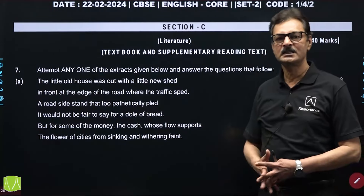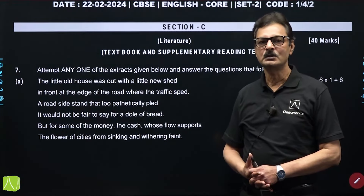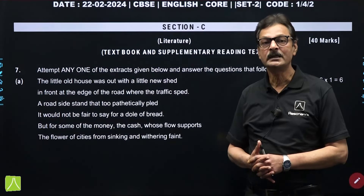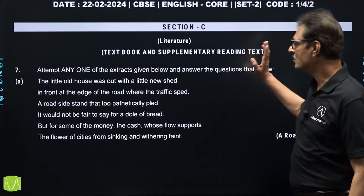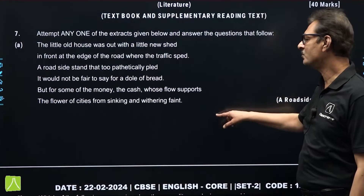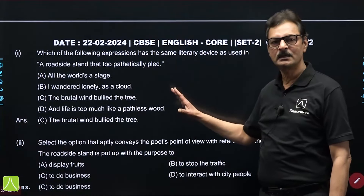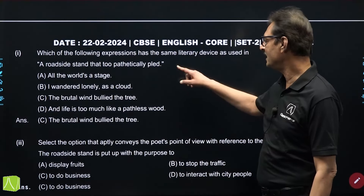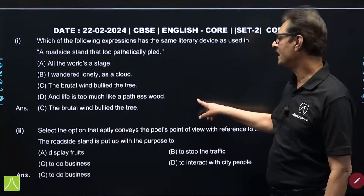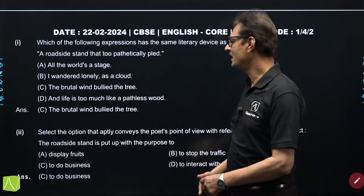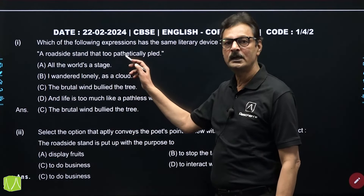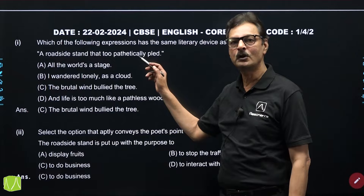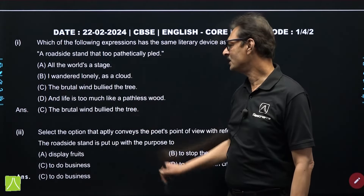Moving on to the last section, that is Section C, which some students found lengthy. The questions were a bit tricky, particularly the MCQs. The first extract-based question from the poems was from the poem 'A Roadside Stand' — a mixed bag of MCQs and subjective type questions. 'A roadside stand, that too pathetically played' — four options are given and the correct option is: the brutal when bullied the tree. The clue here is personification — human qualities are given to non-living things. So the correct option is option number C.